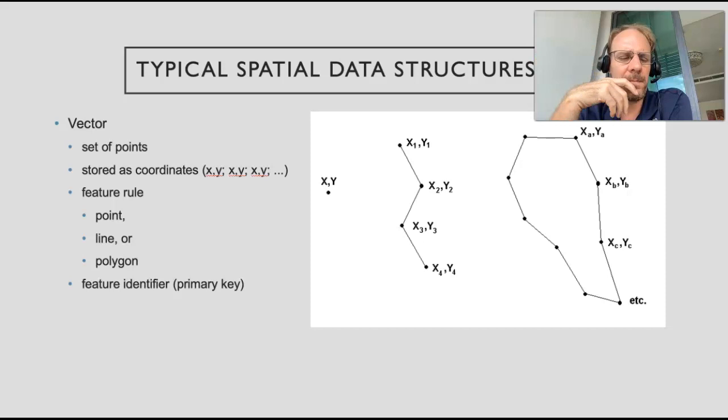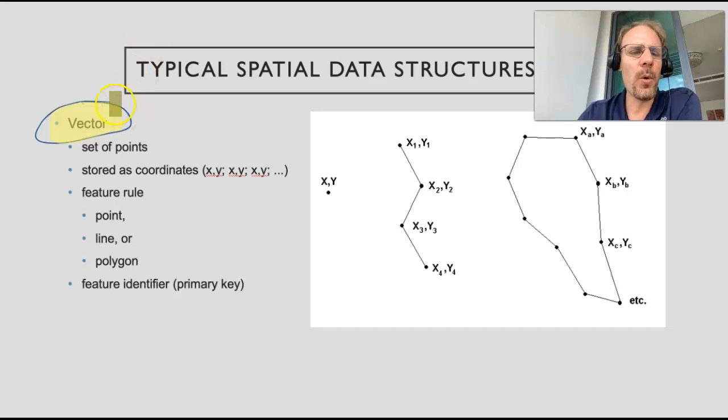This is important - this is the type of data, how these lines and polygons are created in a GIS system. This type of data is called vector data. You'll need to know that for the poll in class. Vector data is points - it's points and they have the coordinates of this point stored. There are three types of vector data: points, lines, and polygons.